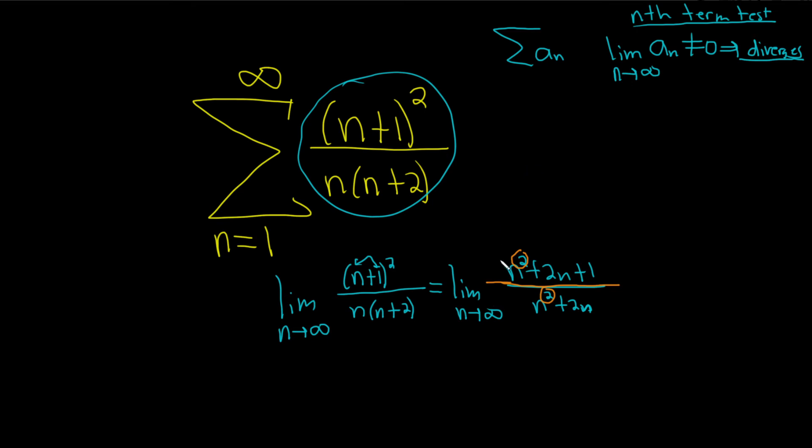And so, when they both have the same growth rate, the limit is going to be the ratio of the leading coefficients. So, the leading coefficient in the numerator is 1, and the leading coefficient in the denominator is also 1. So, in this case, it's just 1 over 1, so we get 1.